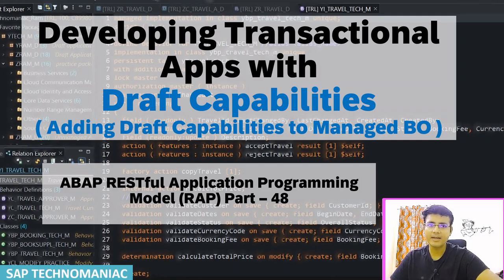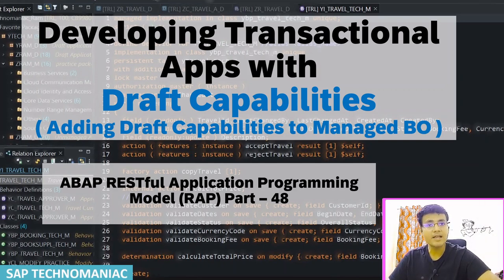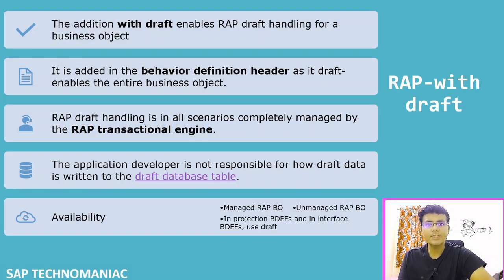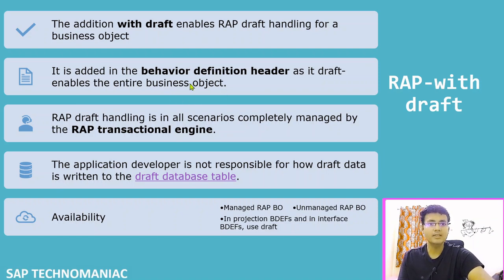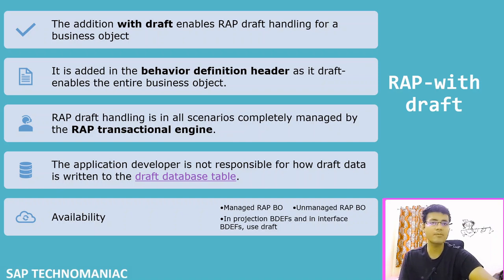Hello everyone, welcome back. Till now we have created the basic managed business object. Now we will add draft capabilities to it. To add draft capabilities in our business object, we have to use the 'with draft' keyword in the behavior definition header. Once we add this keyword, the draft will be handled by the framework, also known as the RAP transactional engine.